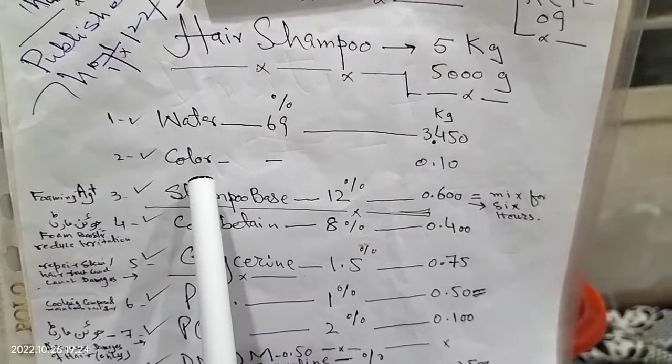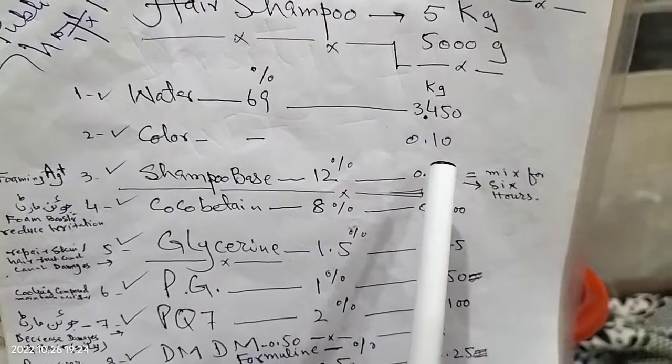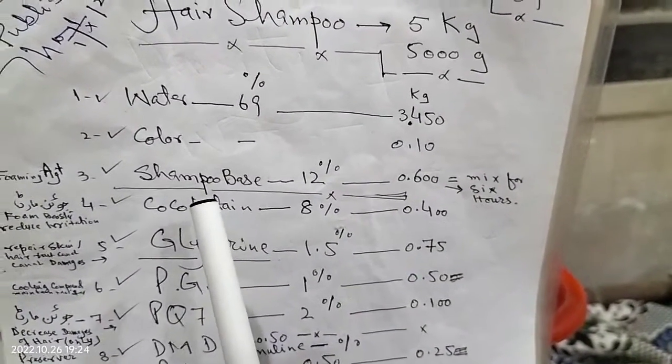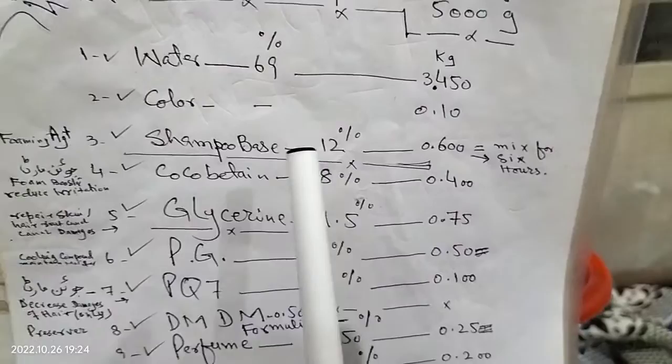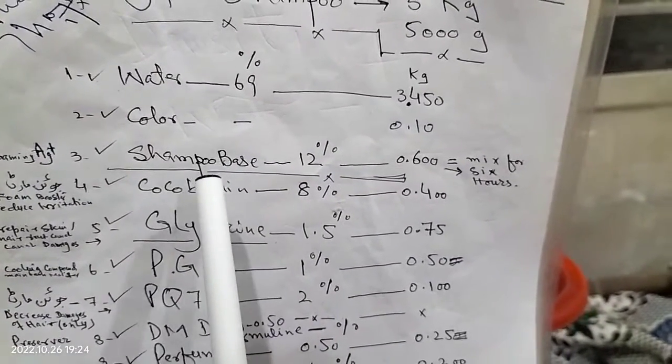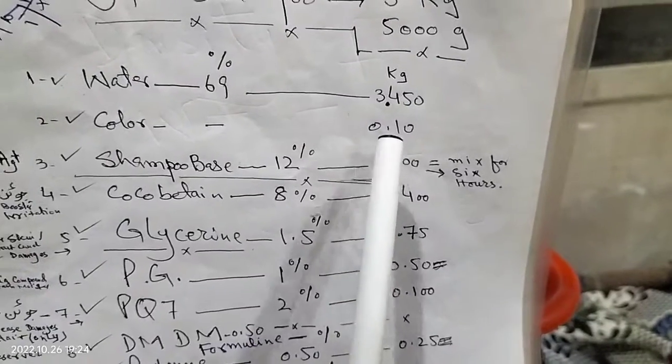Color 10 gram. Shampoo base 12%, foaming agent. Best foaming agent. Quantity 600 gram.